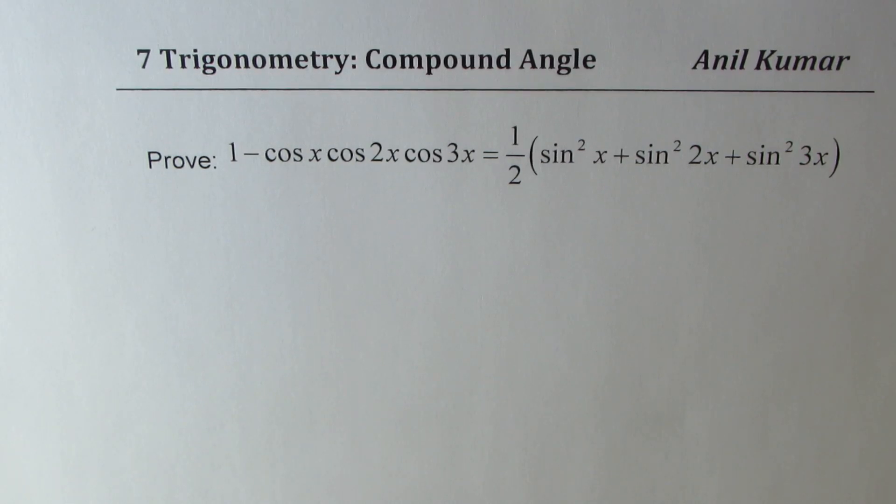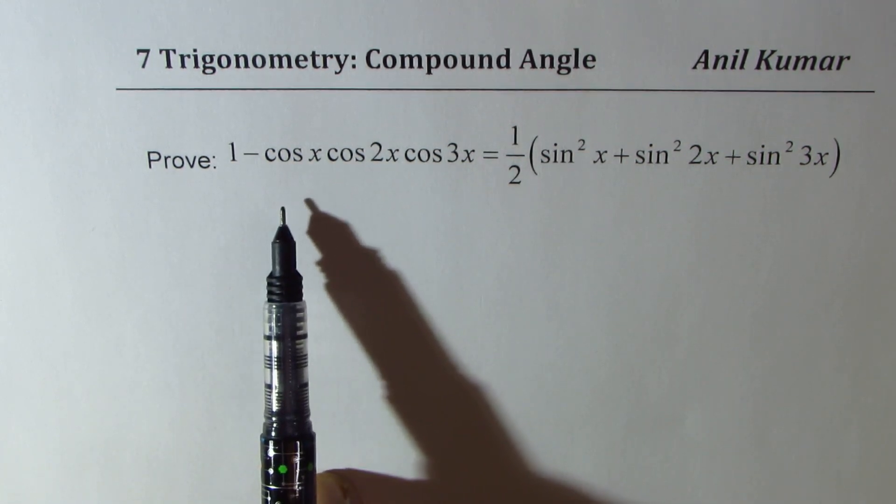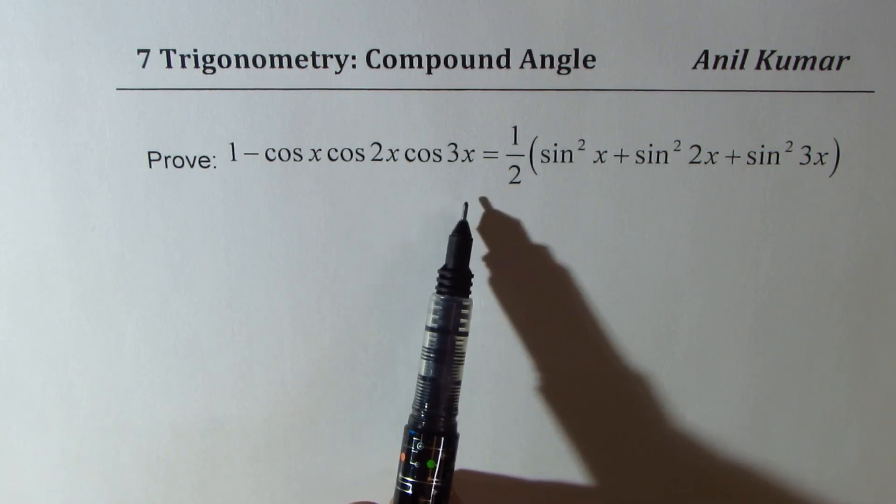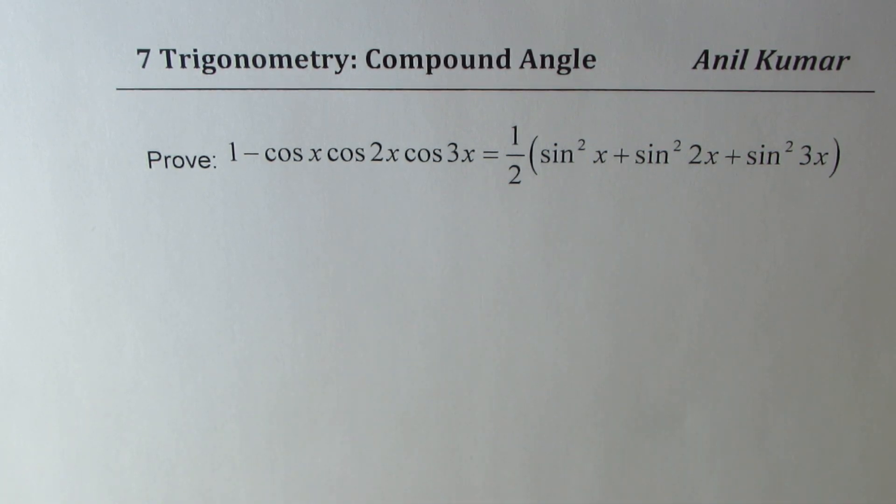I'm Anil Kumar, sharing with you an excellent question on trigonometric identities. We need to prove 1 minus cos x cos 2x cos 3x equals to half of sin squared x plus sin squared 2x plus sin squared 3x.